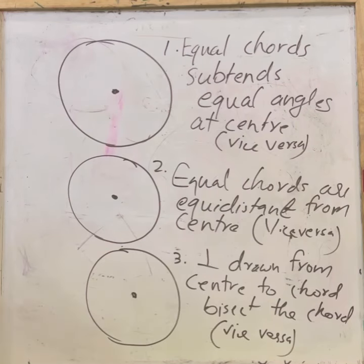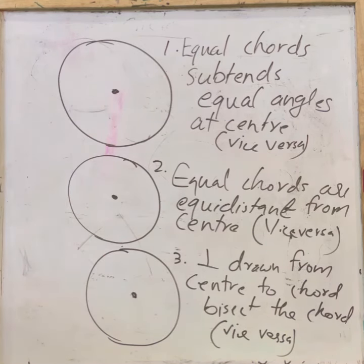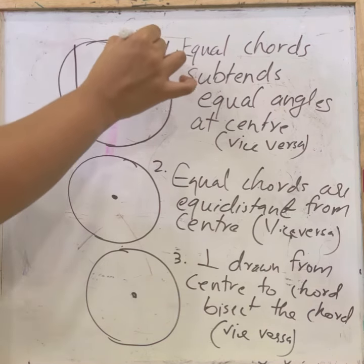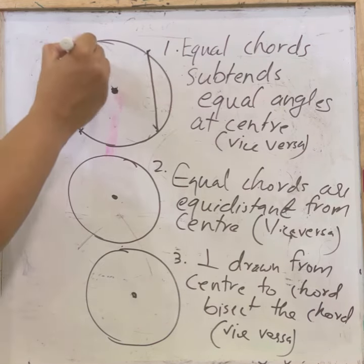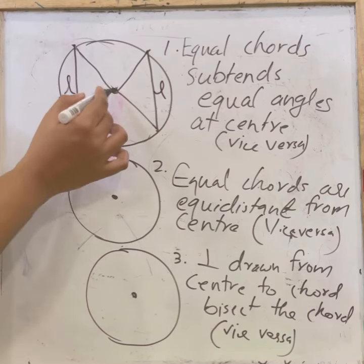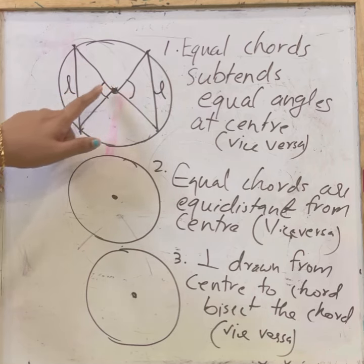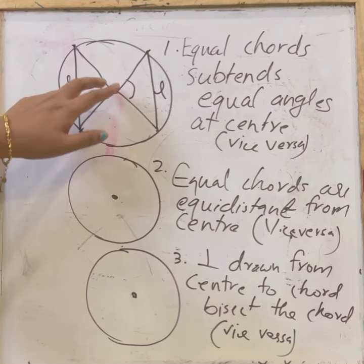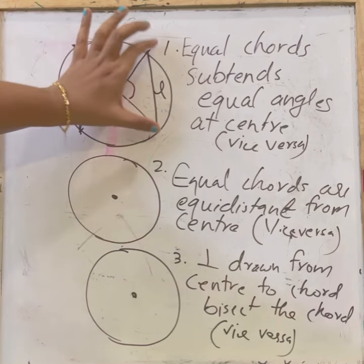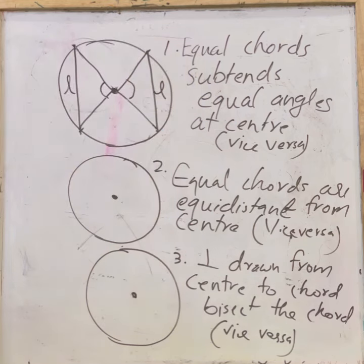Now let us check some theorems from previous classes. Theorem one: equal chords subtend equal angles at the center. If there are equal chords, the angles formed at the center will be equal. Vice versa: if two angles subtended by chords at the center are equal, then the lengths of the chords will be equal.